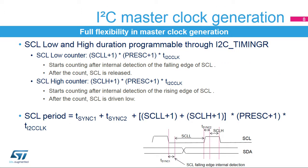The I2C master clock's low- and high-level durations are configured by software in the I2C timings register. The SCL low- and high-level counters start after the detection of the edge of the SCL line. This implementation allows the peripheral to support the master clock synchronization mechanism in a multi-master environment, as well as the slave clock stretching feature. Therefore, the total SCL period is greater than the sum of the counters, linked to the added delays due to the internal detection of the SCL line edge.